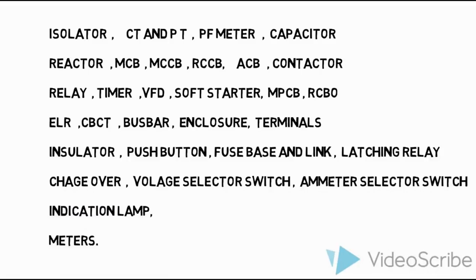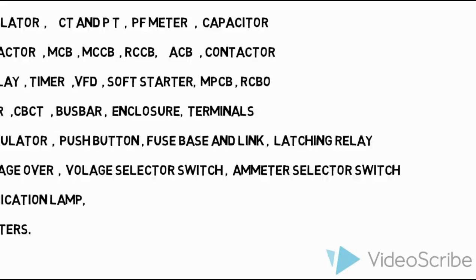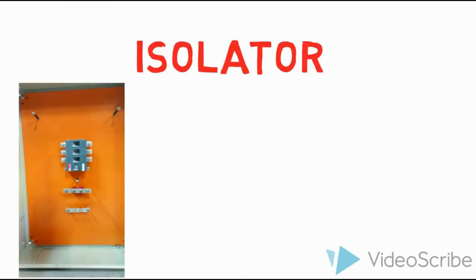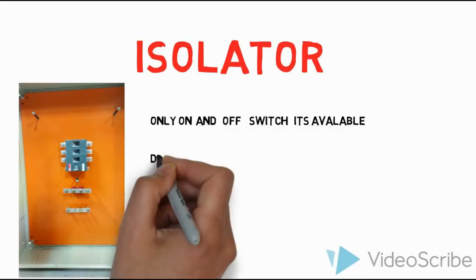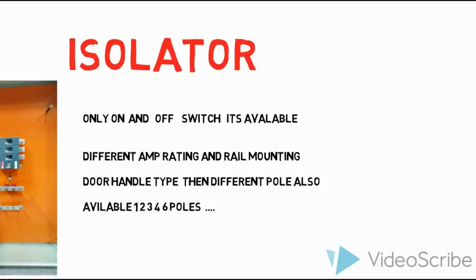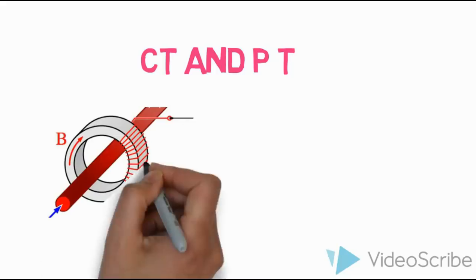First, we will see the Isolator. An isolator is an ordinary switch — an off switch is an isolated switch. The isolator has a small rating. We will see the main rating. There are different types of ratings. We will also see the door mounting handle with one pole, four pole, five pole, and six pole configurations.